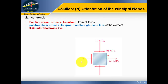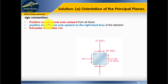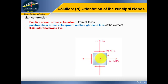Solution A: determine the orientation of the principal planes. Before solving this, it is important to remember the sign convention. Positive normal stress acts outward from all faces — on the right-hand side of the element, if the surface acts outward, we consider it as positive. Any normal stress that acts toward the face of the element is negative.